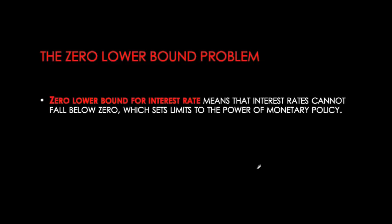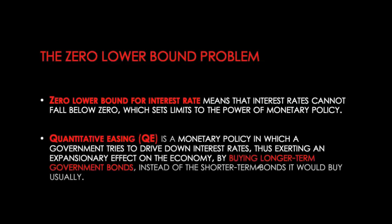One more important issue is the problem of the zero lower bound. We can use monetary policy to achieve any inflation target and to close output gaps, but one main disadvantage is the zero lower bound — you cannot keep putting downward pressure on interest rates indefinitely, as we cannot have zero or negative nominal interest rates. Once the zero lower bound is hit, central banks move to non-conventional monetary policy tools such as quantitative easing or large-scale asset purchases, where the central bank provides liquidity to financial markets by purchasing long-term bonds.